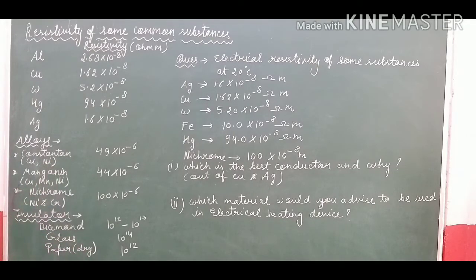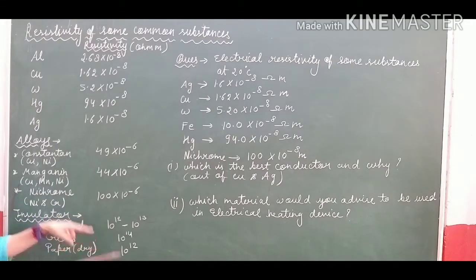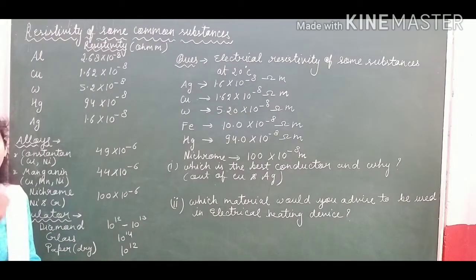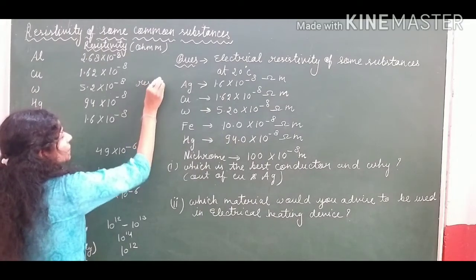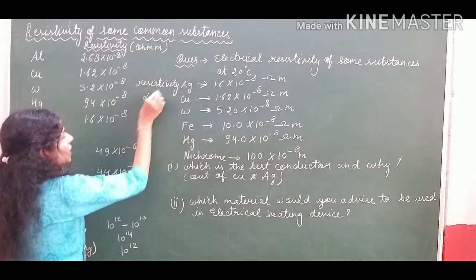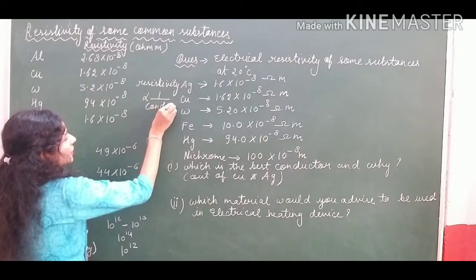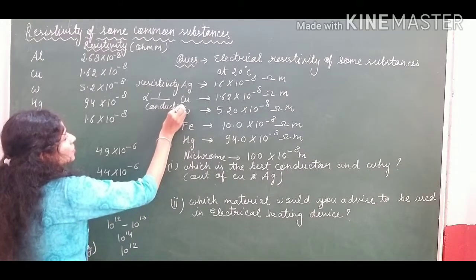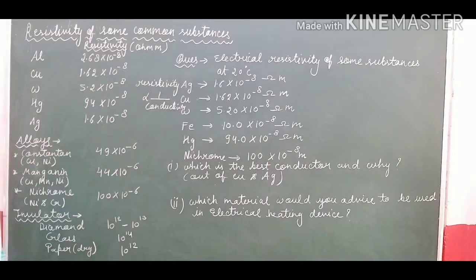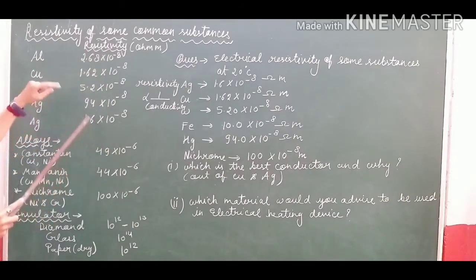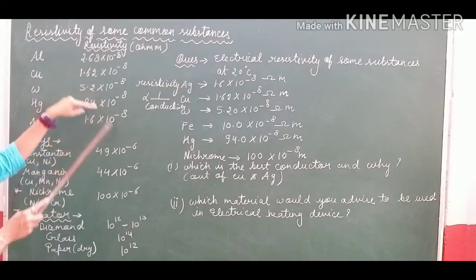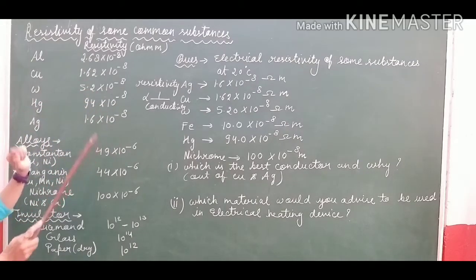You can observe here that when the resistivity value is greater, the substances having high resistivity will have lower conductivity. So we get a relation: resistivity shows an inverse relation with conductivity. Those having high resistivity will have lesser conductivity. The metals with negative exponents in the smaller range are conductors because their resistivity value is lower.